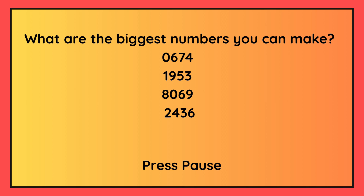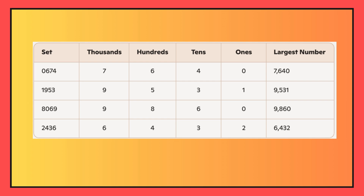What are the biggest numbers you can make? Using the numbers 0, 6, 7, 4, the largest number you can make is seven thousand six hundred and forty. Using the numbers 1, 9, 5 and 3, the largest number is nine thousand five hundred and thirty-one. Using the numbers 8, 0, 6 and 9, the largest number is nine thousand eight hundred and sixty. And finally, using the numbers 2, 4, 3 and 6, the largest number is six thousand four hundred and thirty-two.